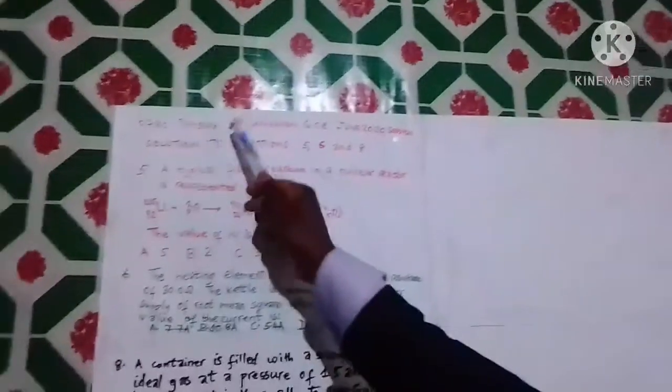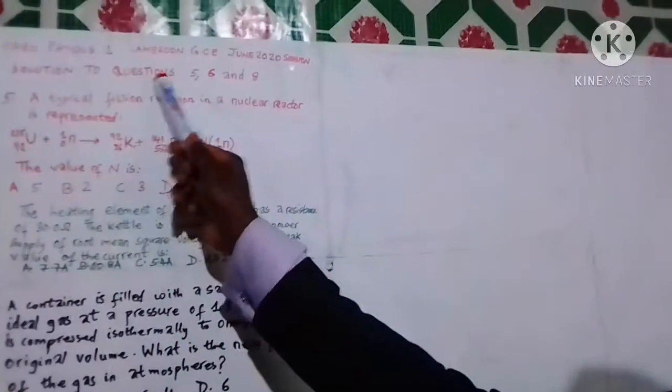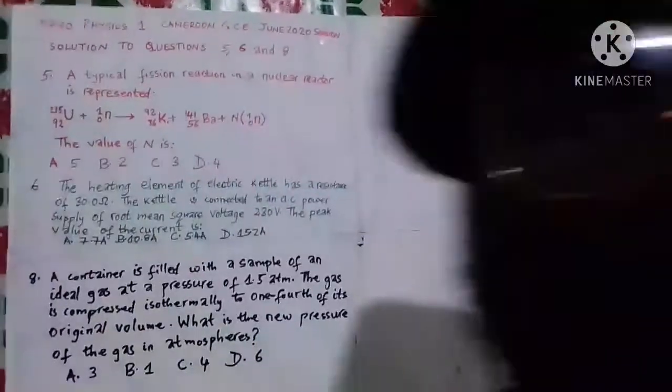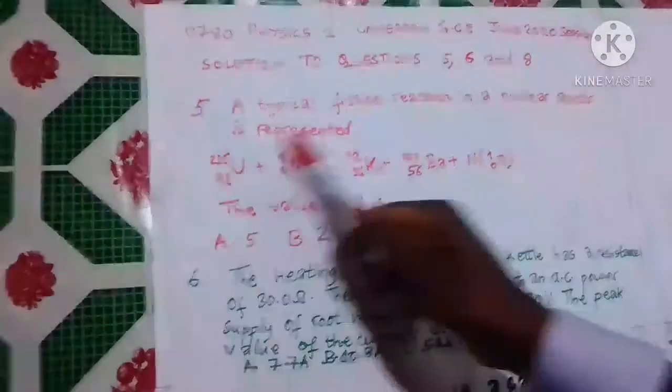Hello guys, today I'm going to continue. Follow up attentively as I solve these problems from start to finish. Welcome back — let's start with question number five. It says a typical fission reaction in a nuclear reactor is represented.